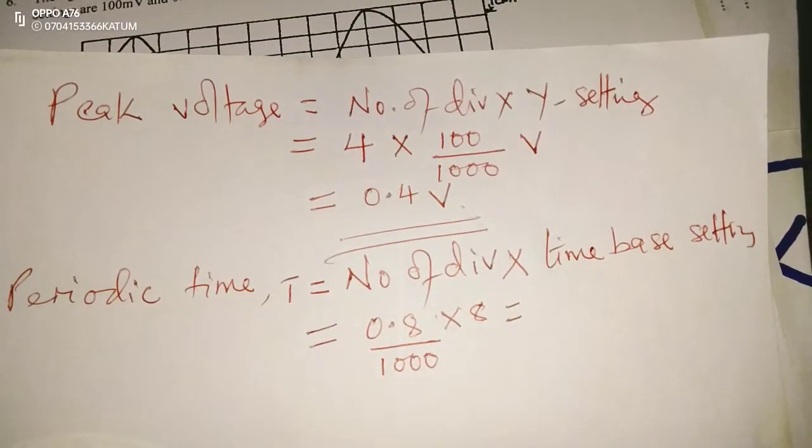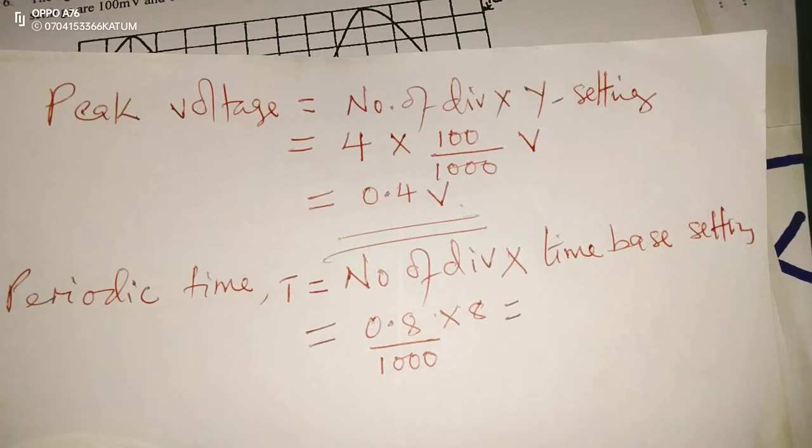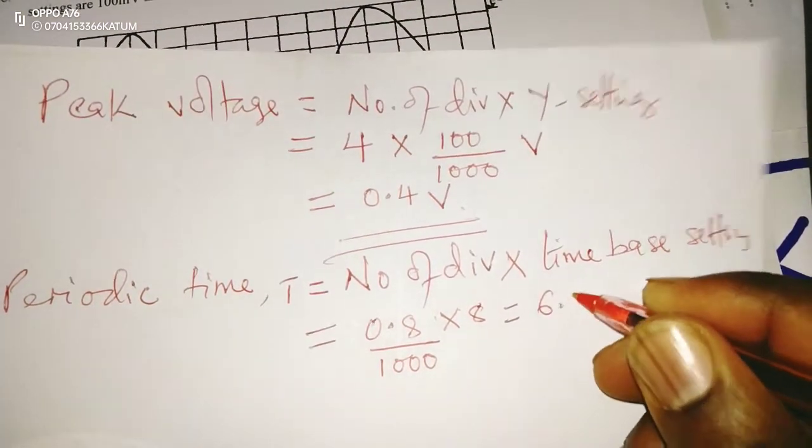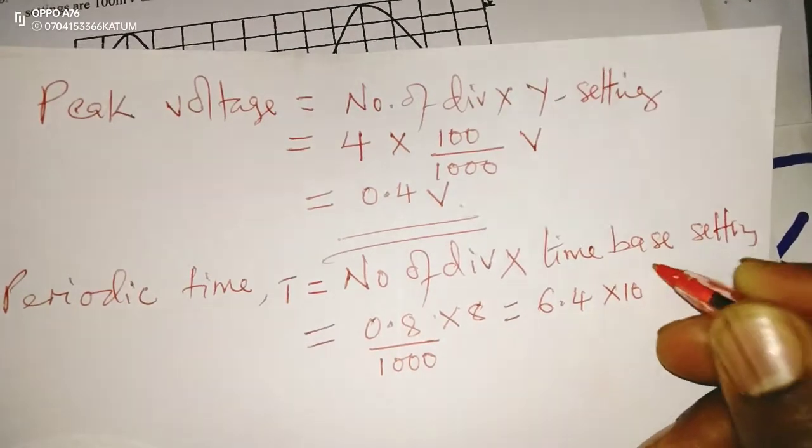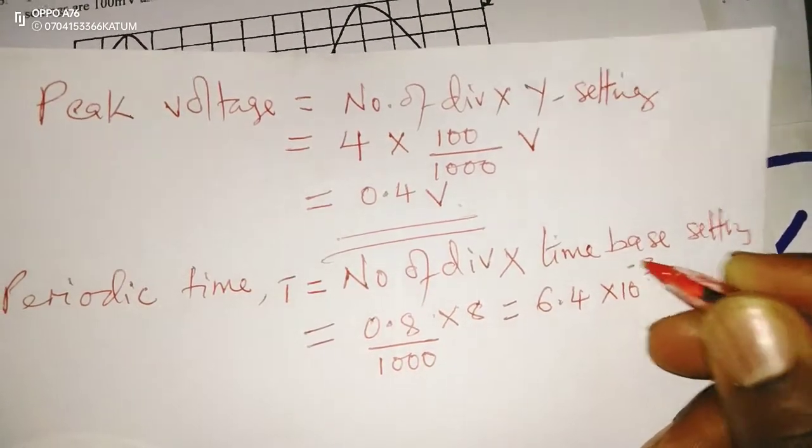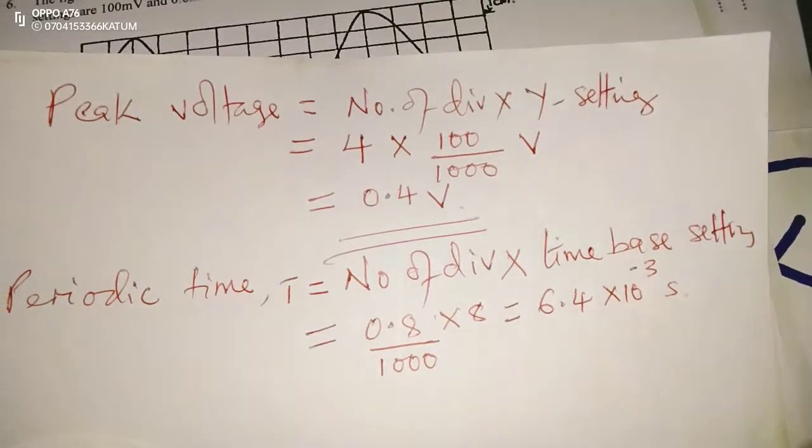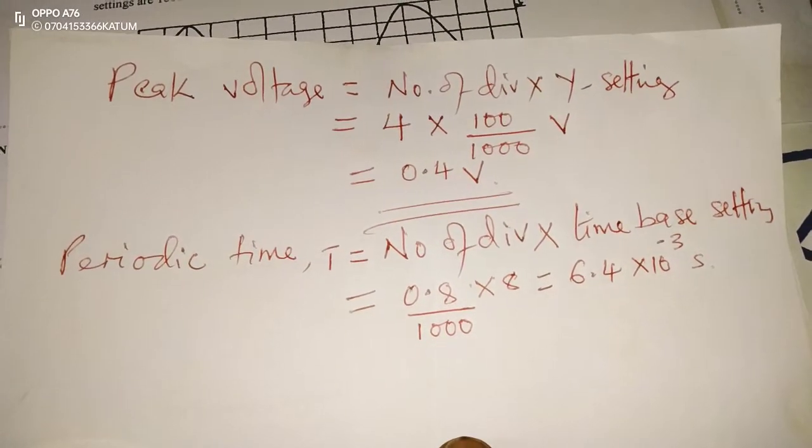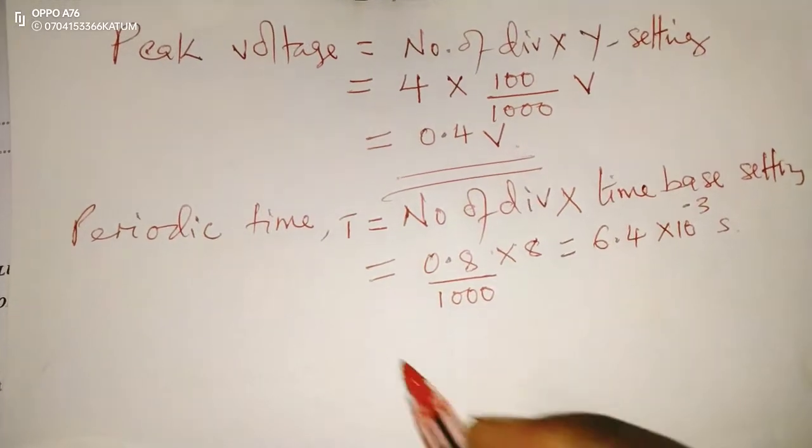So, 0.8 times 8, then we divide by 1000. This will give us 6.4 multiplied by 10 raised to the power of negative 3 seconds. Because the number of seconds in a complete cycle will give us period.